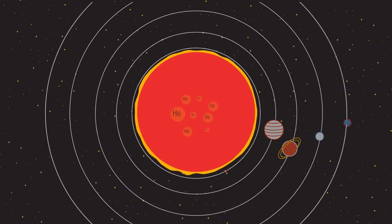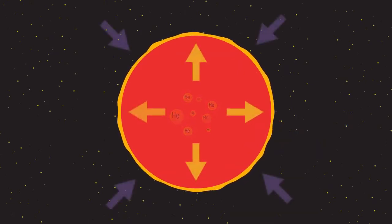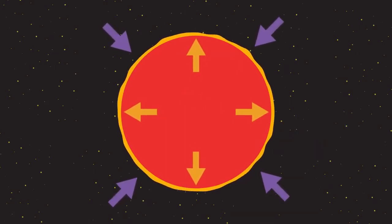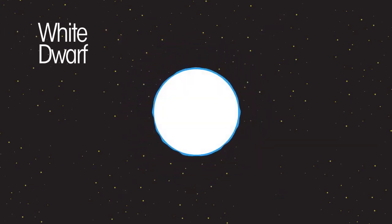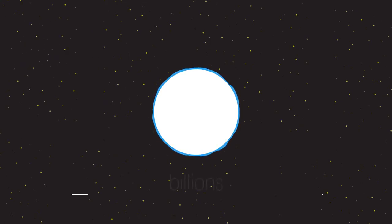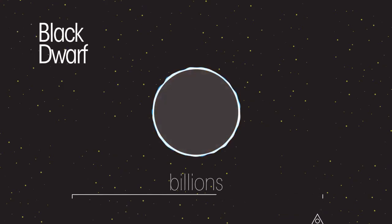Fusion of helium in the red giant will eventually stop. Suddenly, the force of gravity is greater than the outward pressure of fusion, causing the star to collapse, forming a white dwarf. No more fusion is occurring inside the star and so the white dwarf cools down. Eventually, after many billions of years of cooling, it stops releasing heat and it becomes a black dwarf, as cold as the empty space that surrounds it.